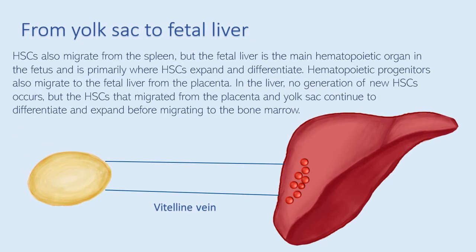Hematopoietic stem cells also migrate from the spleen, but the fetal liver is the main hematopoietic organ in the fetus and is primarily where hematopoietic stem cells expand and differentiate. Hematopoietic progenitors also migrate from the placenta to the fetal liver. Hematopoietic stem cells circulating in the bloodstream migrate into the liver through a process called seeding.